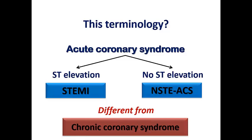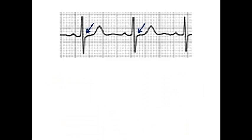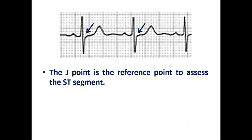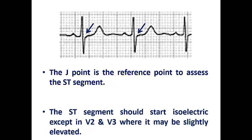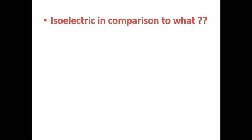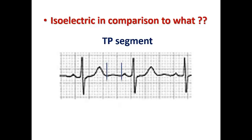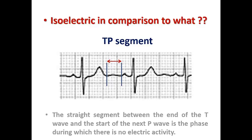These two categories are different from chronic coronary syndrome, where anginal pain occurs with exertion or stressful situations, so the patient is considered stable. Its previous term was stable coronary artery disease, now changed in the last ECG guidelines to chronic coronary syndrome. The J point is the reference point to assess the ST segment — at the end of the QRS complex and start of the ST segment. The ST segment should start isoelectric, except in V2 and V3 where it may be slightly elevated. We compare to the TP segment as the isoelectric line.